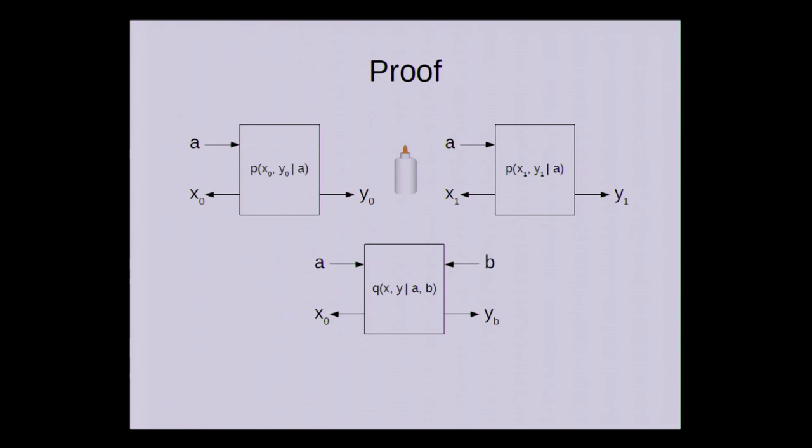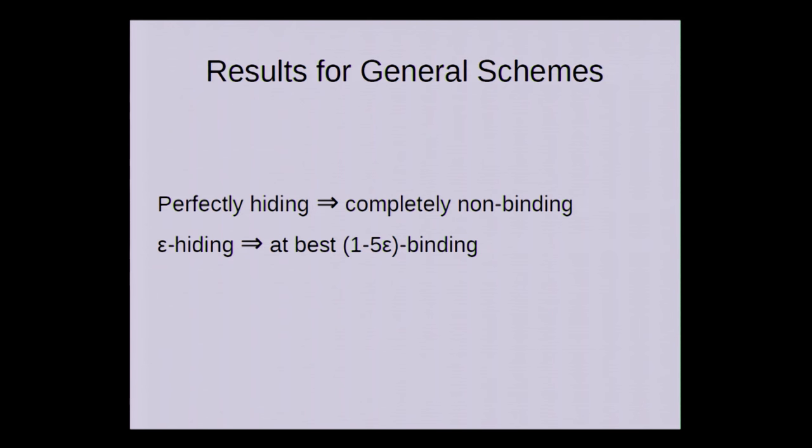And on the left we always output x0 anyway so that's clearly independent of b. And now how does it hold up against the bit commitment scheme? First in the case that the provers have to open to zero, then they always win because the output distribution is x0 y0 which is exactly like that of the honest provers. And in the case that b is one, the output distribution is x0 y1, but that's statistically close to x1 y1. So the behavior of the dishonest provers is statistically close to the behavior of the honest provers so Alice has only a small chance to decide if the provers are honest or not.